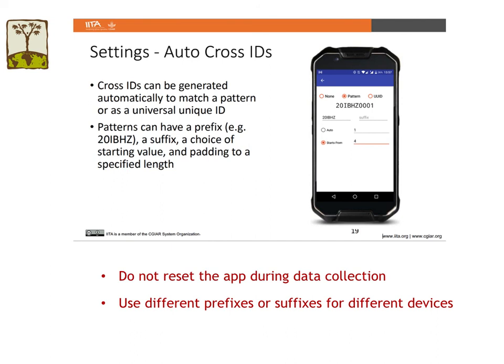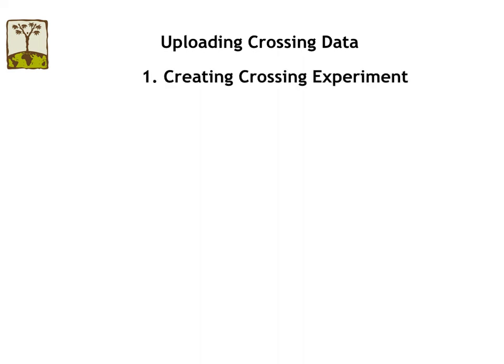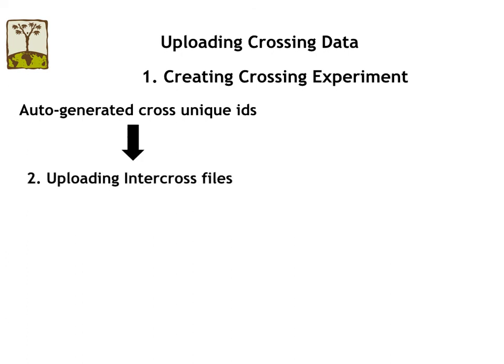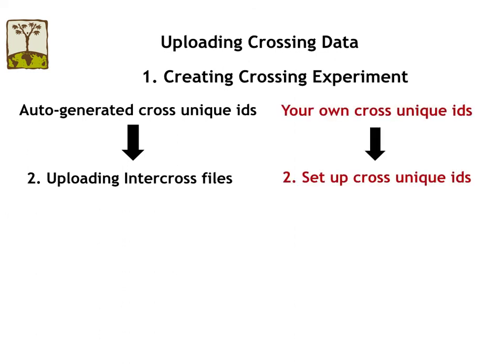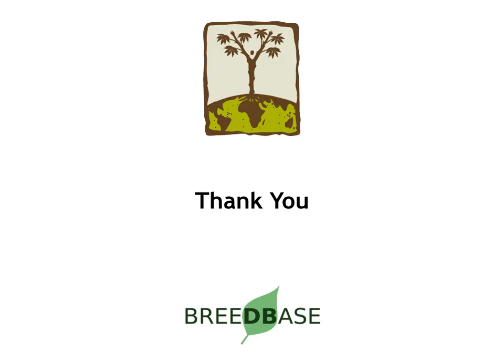To summarize the uploading process: first, create a crossing experiment. For the cross unique IDs, if you choose the auto-generated option, you can just keep uploading the InterCross file. If you choose to use your own cross unique IDs, you need to set up the cross unique IDs first, then upload the InterCross files. Please let me know if you have any questions. Thank you!